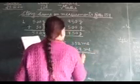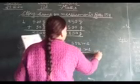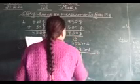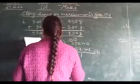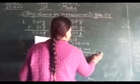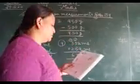352 ml plus 289 ml. Write it down. 1, 9 and 2 is 11, I will carry 1. 8 and 5 is 13, and 14. So it will be 641 ml. This is the total juice.